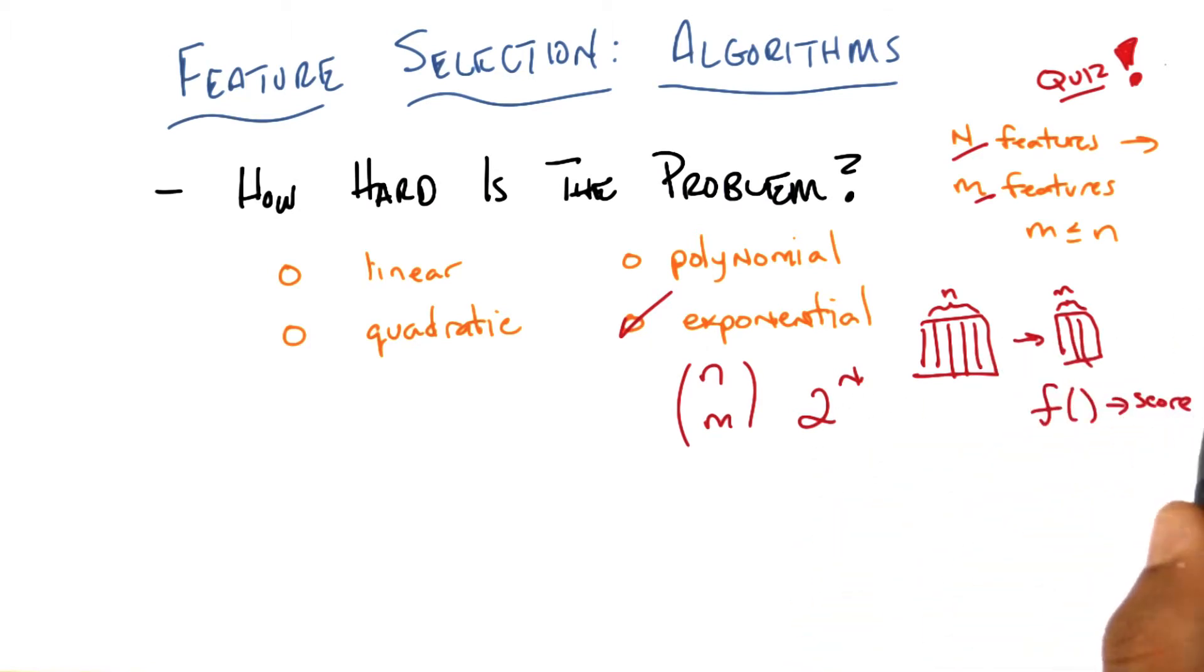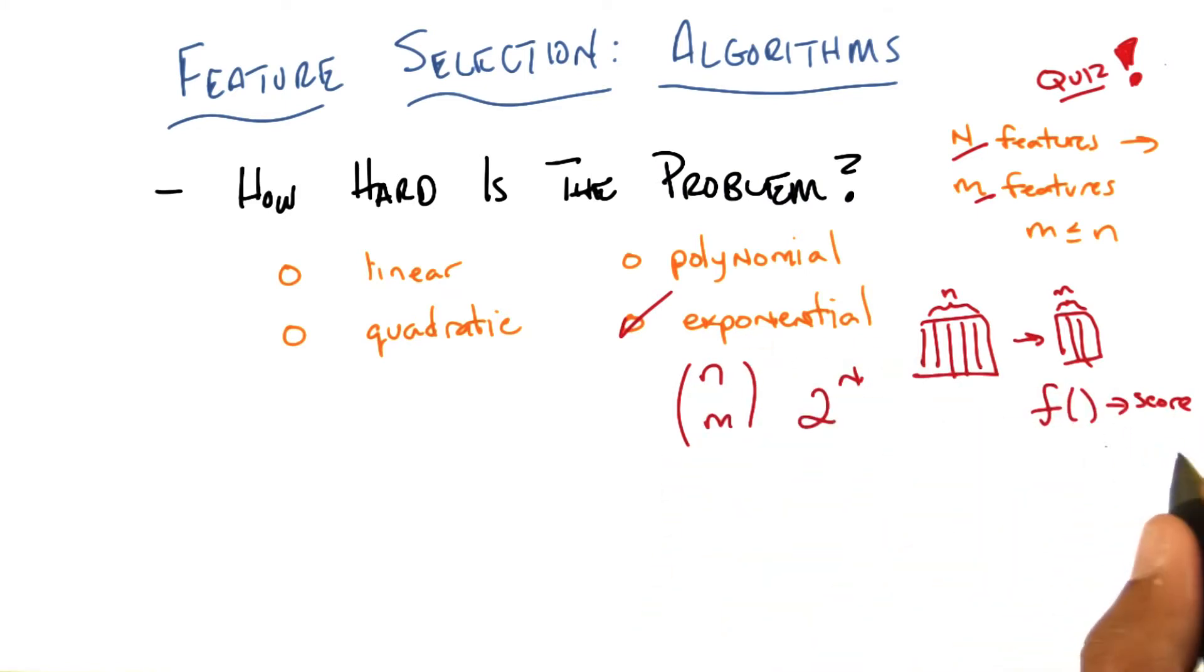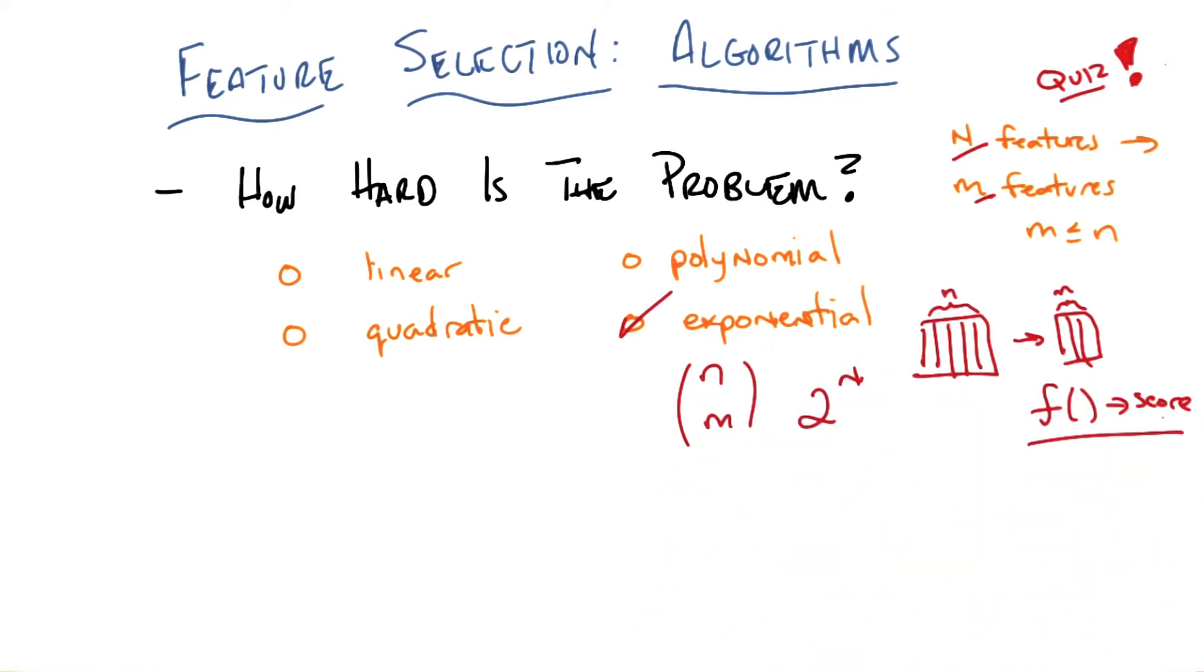But the other way of thinking about this is that, of course this problem is hard. Of course it's exponential. It is effectively an optimization problem over a set of arbitrary discrete variables. That's how I was thinking about it because we always seem to come back to that. Right.